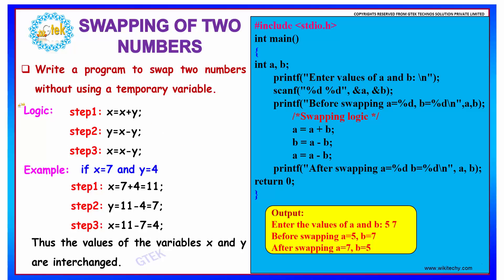The logic behind swapping two numbers without using a temporary variable is that our first step is we have the variable x to which we will be summing both the values, x and y. We are adding it and storing it in x. Now x will have the sum of both the numbers.